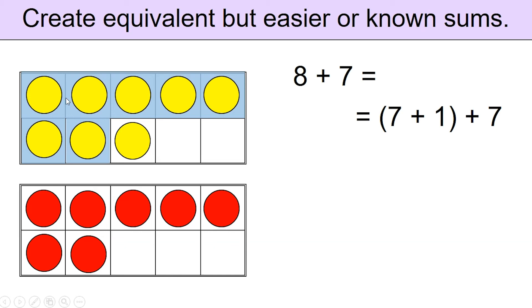Use the doubles fact. 7 in the first ten frame plus 7 in the second frame adds up to 14. 14 plus 1 more gives 15. 8 plus 7 is 15.